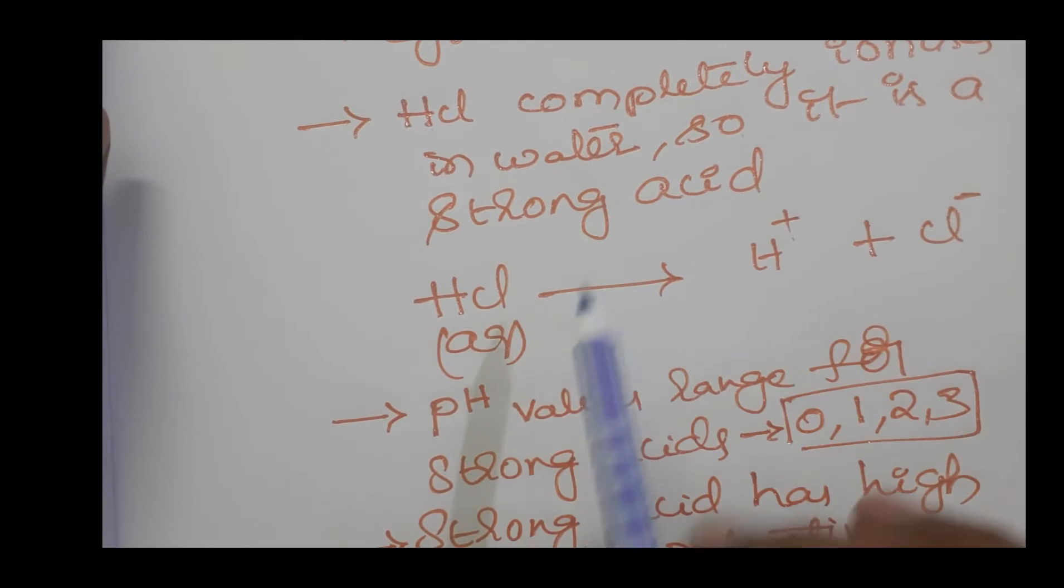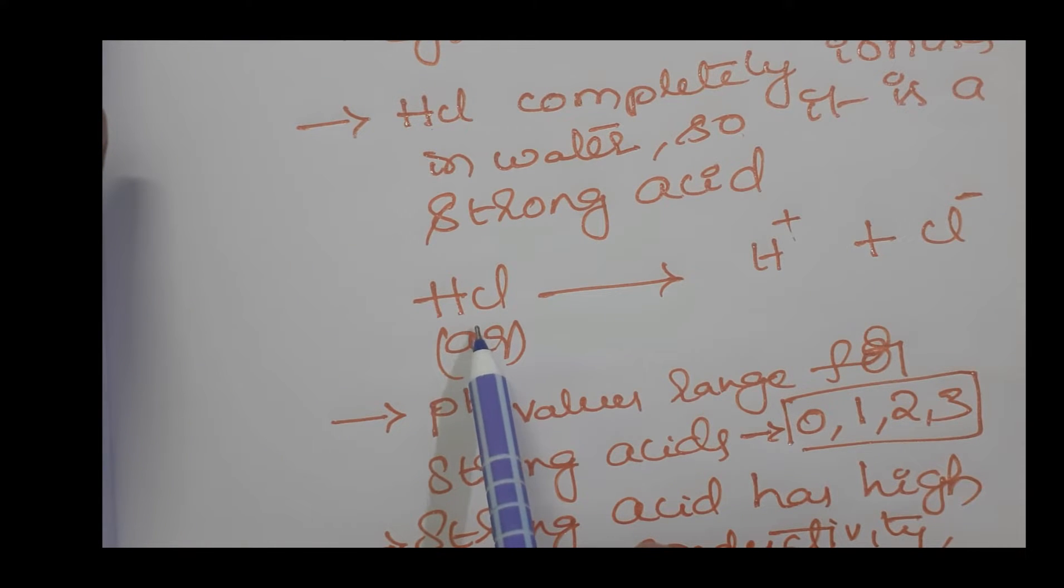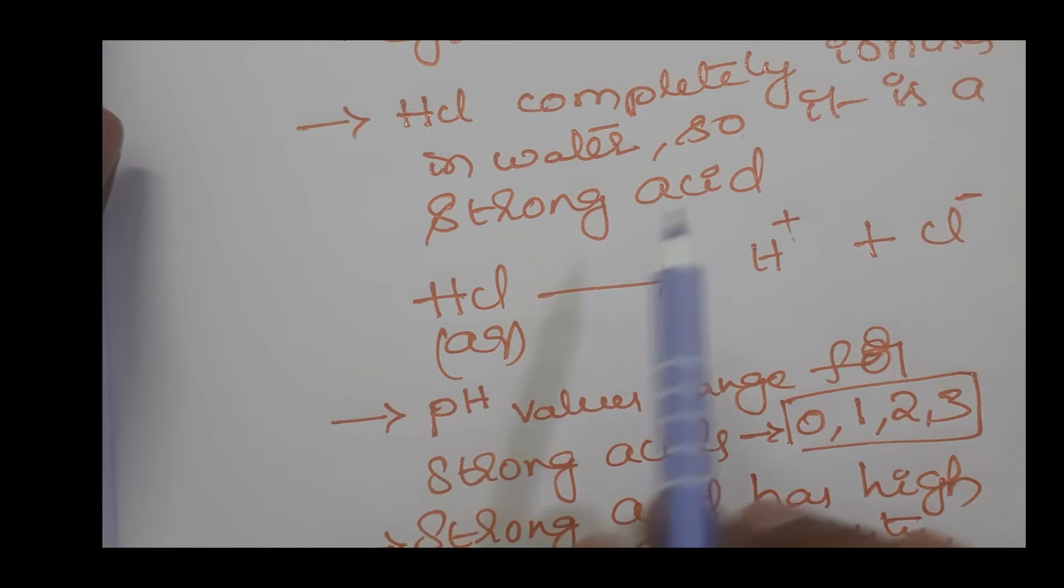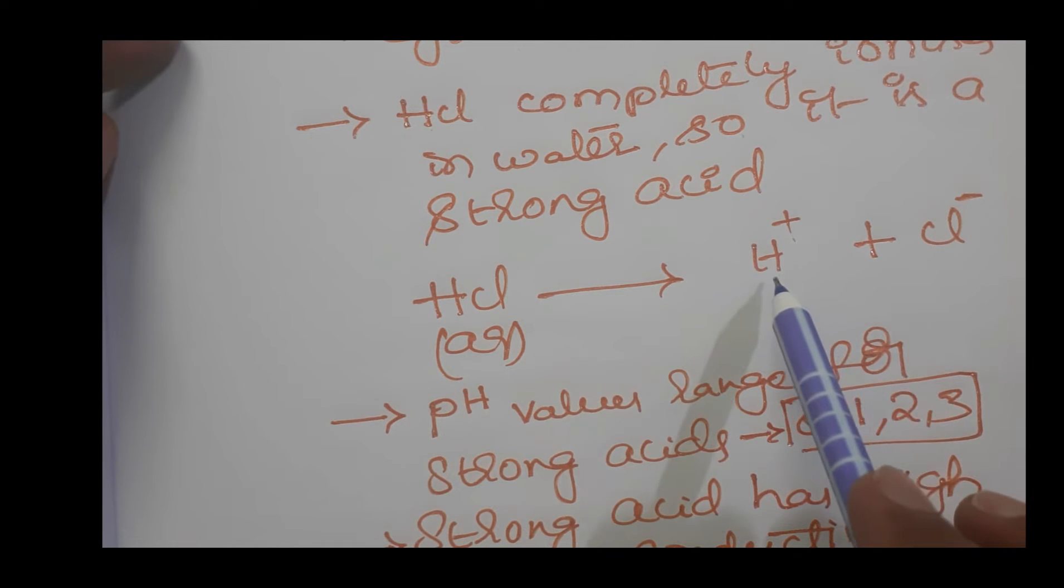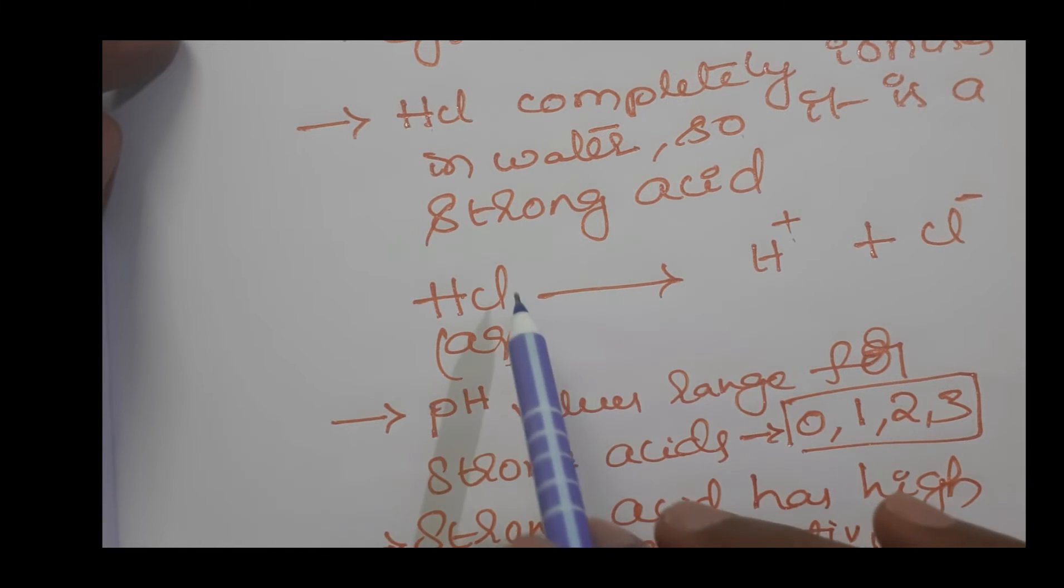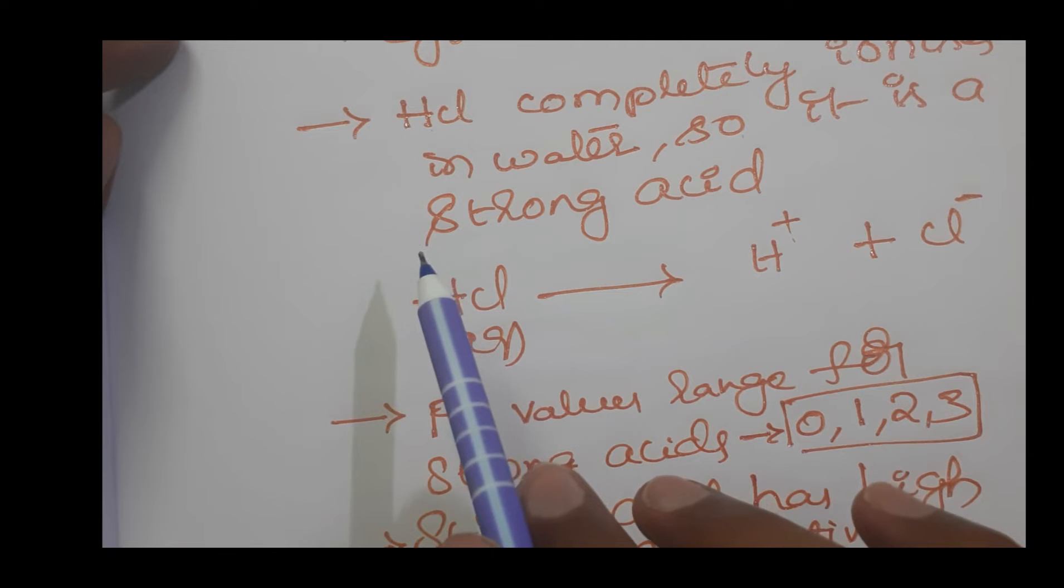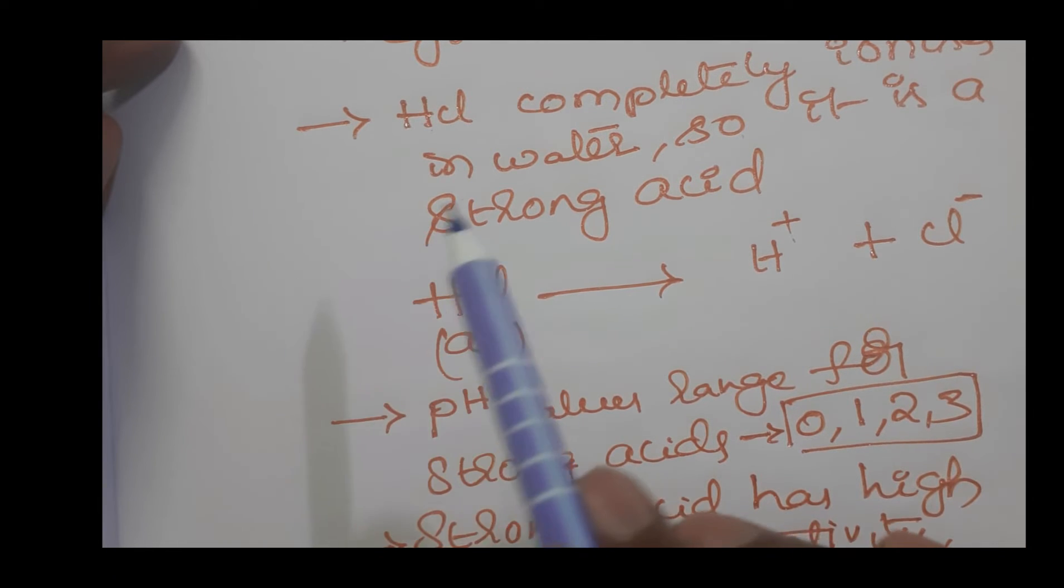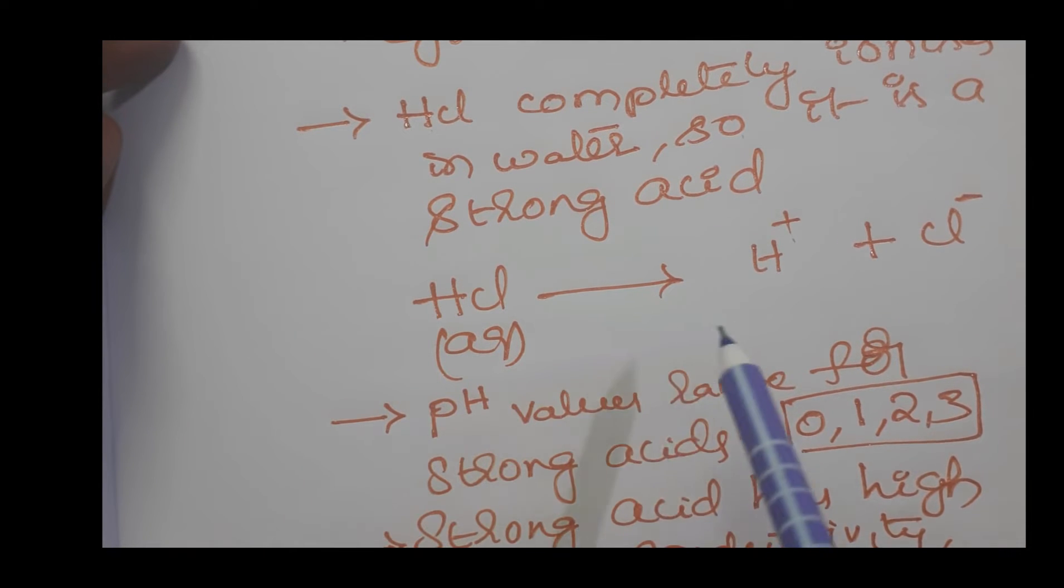For example, if we take some quantity of hydrochloric acid that has suppose 1000 HCl molecules, all 1000 HCl molecules split into 1000 H+ ions and 1000 Cl- ions. This means all molecules of HCl in the taken acid completely ionize.